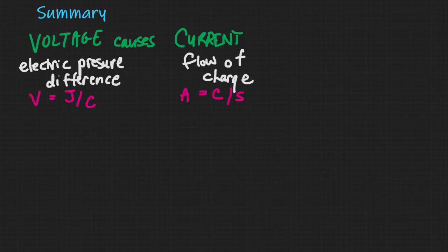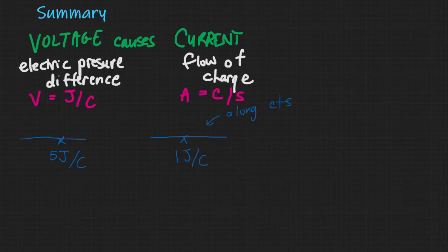A current of one ampere means one coulomb of charge is passing a point each second. If we're talking about five volts — five joules per coulomb — then at some point in space charges would have five joules of energy for every coulomb placed there. At another point at one volt, charges would have one joule of energy per coulomb. Because wires essentially have zero resistance, any place along a continuous piece of wire has the same voltage — the same joules per coulomb. Along a long continuous piece of wire, V is constant.